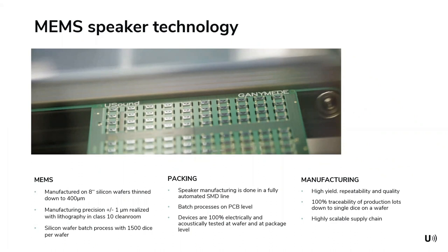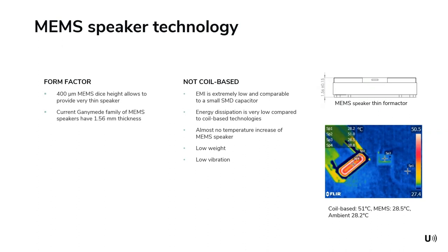A quick overview of the MEMS technology: we start with an 8-inch wafer where we have our MEMS actuator. The MEMS actuator is then picked, placed, and flip-chipped onto a two-layer PCB. We then place the cover and acoustic membrane to complete the loudspeaker. The main advantage in manufacturing is full automation, with 100% traceability — forward and backward — at component level. Every loudspeaker is 100% tested at electrical and acoustic level. Our current MEMS loudspeaker component has a thickness of 1.6 mm.